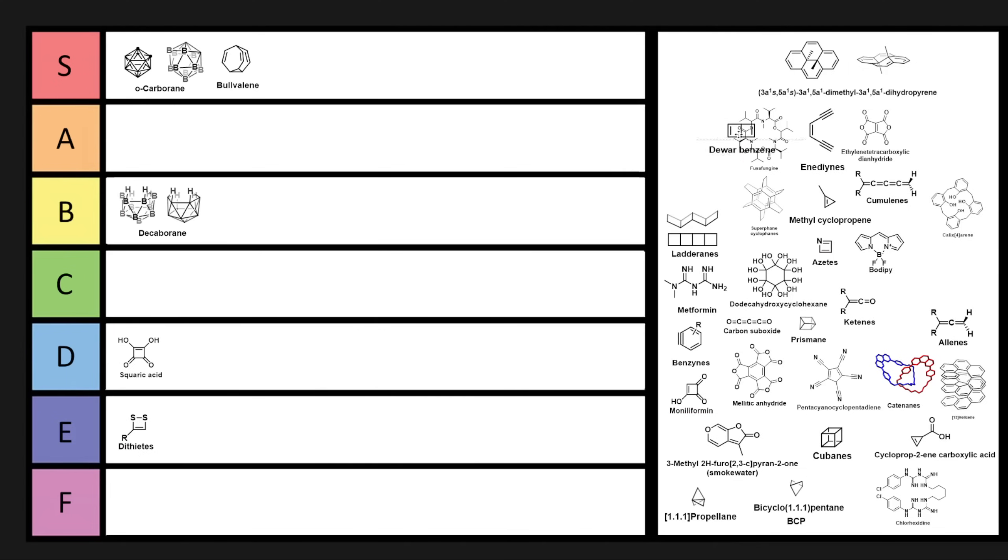Now, one that is extremely cursed is Dewar benzene. And this is one possible structure that Dewar originally proposed as the possible structure for benzene, although this has actually been made subsequently. So this can be synthesized. I don't think it has any real utility. It definitely is a very cursed-looking molecule because not only does it have two cyclobutane rings, but there's also a double bond making them cyclobutenes. So this is definitely pretty cursed. I think Dewar benzene is going to have to go in A-tier.